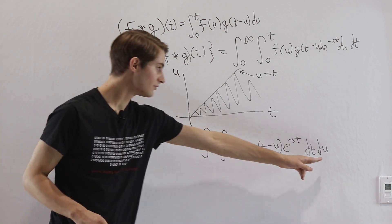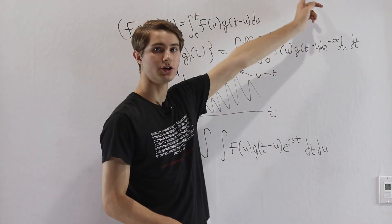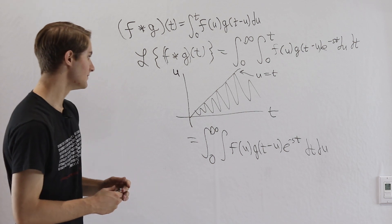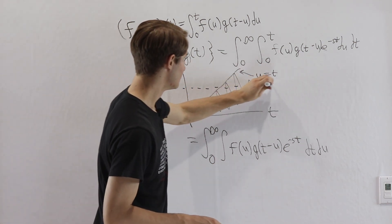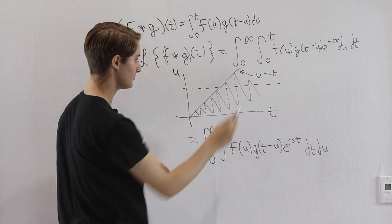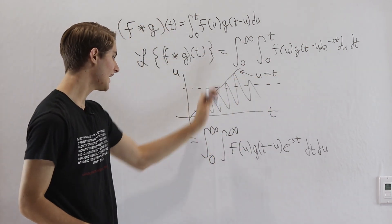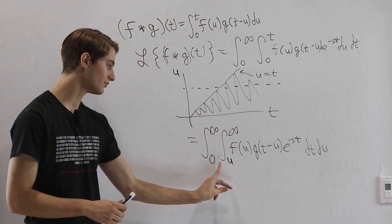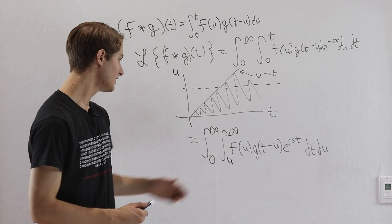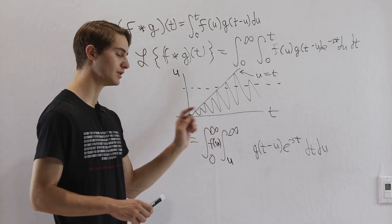For the range of u: u also goes from 0 to infinity, because as t gets bigger, u can also get bigger. For a particular value of u, looking at a horizontal slice, t ranges from the point on the line u equals t all the way out to infinity. So t starts at that value of u and goes to infinity. Because we're integrating with respect to t first, f of u is a constant we can bring outside the integral.